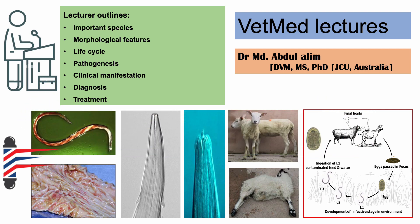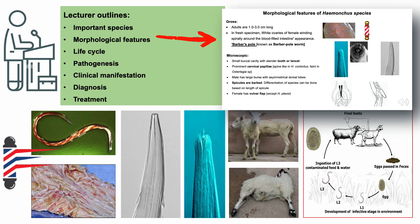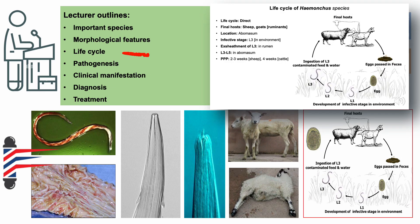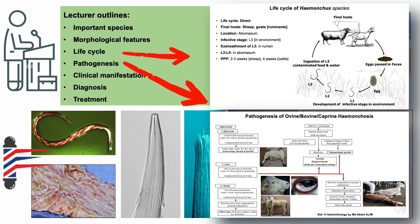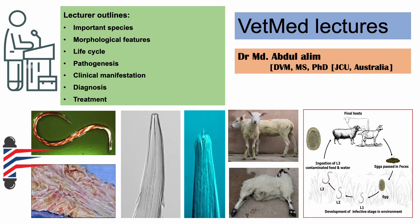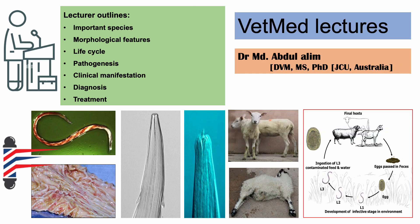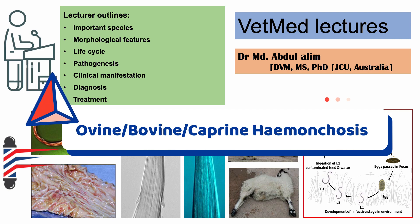First, I will highlight the causative agents or important species that cause hemonchosis, followed by their morphological features. Then I'll discuss the life cycle, pathogenesis, and clinical manifestation of the disease in animals. Finally, I will highlight the diagnosis, post-mortem findings, and treatment of ovine, bovine, or caprine hemonchosis.